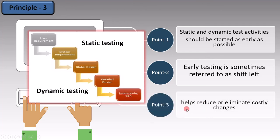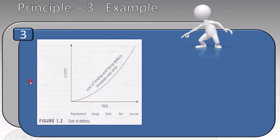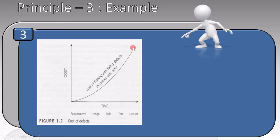The last point is that early testing helps to reduce or eliminate costly changes. Here is a very popular graph about the cost-to-time graph of finding defects. In the requirements stage, the cost of locating a defect is the lowest. When you move to the design stage, it becomes a little costlier. Then, as you move to the build stage and then to the test stage, it gets more and more expensive. Finally, at live use, it is the costliest to discover a defect in the product.